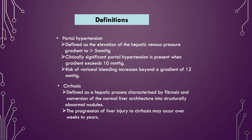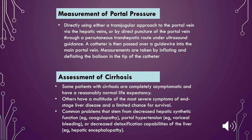Indeed, patients with hepatitis C may have chronic hepatitis for as long as 40 years before progressing to cirrhosis. The portal pressure can be measured directly using a transjugular approach to the portal vein via the hepatic veins, or by direct puncture of the portal vein through a percutaneous transhepatic route under ultrasound guidance. A catheter is then passed over a guide wire into the main portal vein, and measurements are taken by inflating and deflating the balloon at the tip of the catheter.